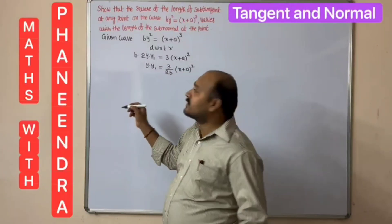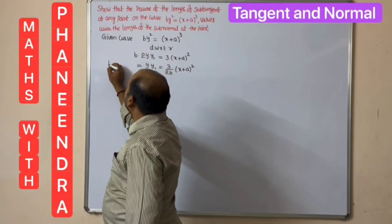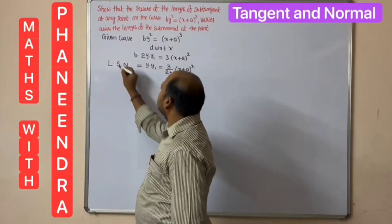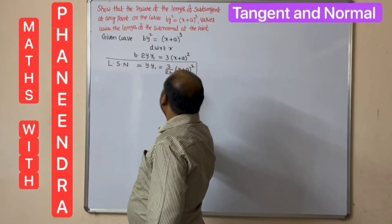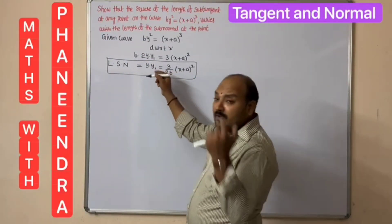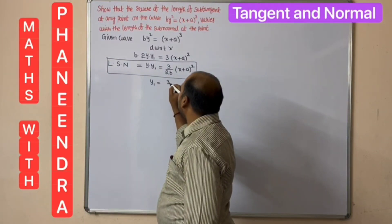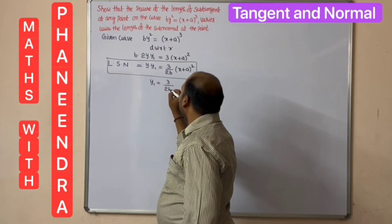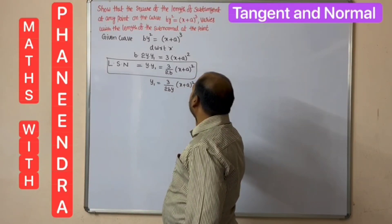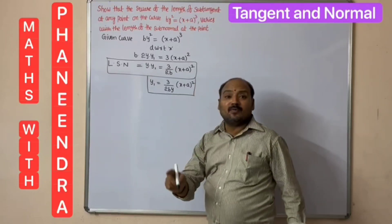Note that y · y₁ is the length of subnormal (LSN). Now from this, we make y₁ the subject: y₁ = 3(x + a)² / (2y). This y₁ value will be used to calculate the length of subtangent in the next step.